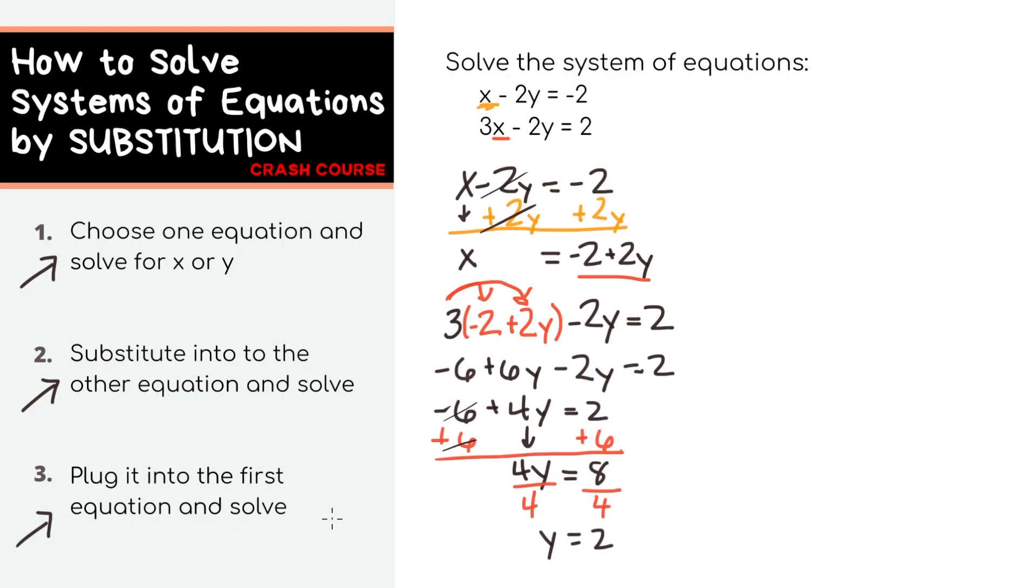Final step, plug what you just got back into the equation from step 1. We'll get x equals negative 2 plus 2 times 2 and end up with x equals 2 when we simplify. That's again our final answer: x equals 2 and y equals 2.